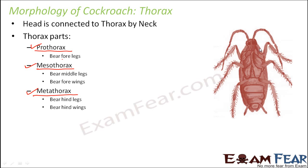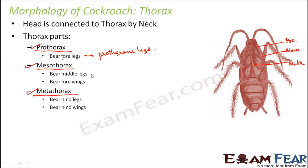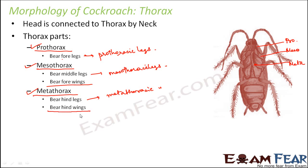The portion just below the head is the prothorax, just below that is mesothorax, and even below that is metathorax. Prothorax bears the fore legs, mesothorax bears the middle legs, and metathorax bears the hind legs and hind wings. These are also called prothoracic legs, mesothoracic legs, and metathoracic legs respectively. The fore wings arise from mesothorax and the hind wings arise from metathorax.